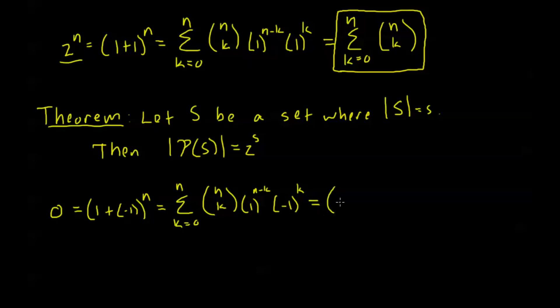So expanding this out, this is going to be n choose 0 minus, because here my k is 1, so it's odd, n choose 1. When k is 2, it's even, so plus n choose 2 minus n choose 3 plus and so on.